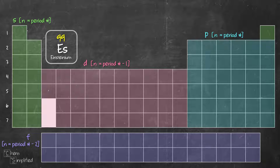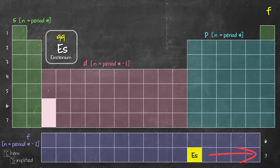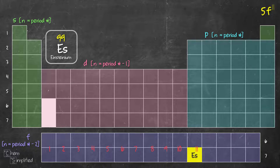Now we move on to an example from the F block — element number 99, einsteinium, which has 99 electrons. This is a good test to see if you've fully understood what we've covered so far. Einsteinium is part of the inner transition metals and is located in period 7 in the F block. For F block, the energy level is period number minus 2: 7 minus 2 equals 5, so we write 5 in front of F. Counting all boxes leading up to einsteinium gives us 11, so it's 5f11.